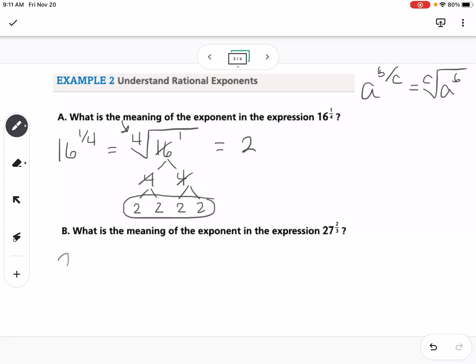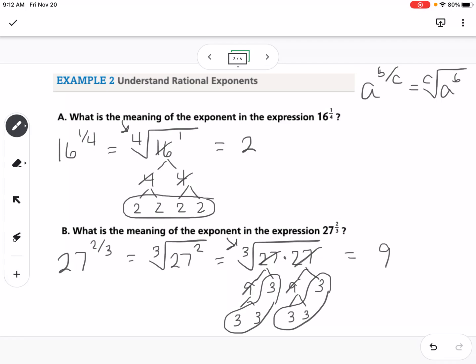Same thing down here. If we have 27 to the 2 thirds power, we can rewrite that as the cube root of 27 squared. Now here's the part where if you're simplifying this, I wouldn't take the time to do 27 squared and get a value. I would just rewrite this as the cube root of 27 times 27, especially if you're making a factor tree. So I know 27 is 9 and 3 and 9 and 3, and I know 9 is 3 and 3 and 3 and 3. I'm going to cross off those that I factored. So the index in this root is 3, so I need 3 numbers in a group. So I would have 3 3's and 3 3's. I multiply 1 from each group together, so my answer here would be 9.